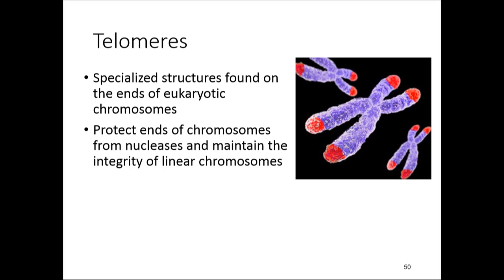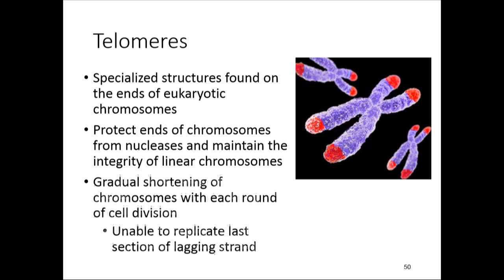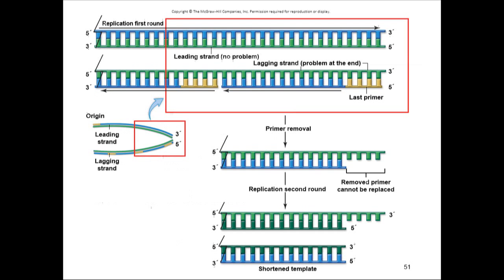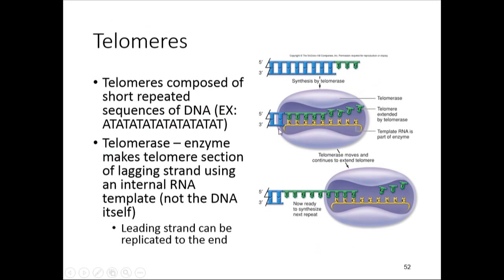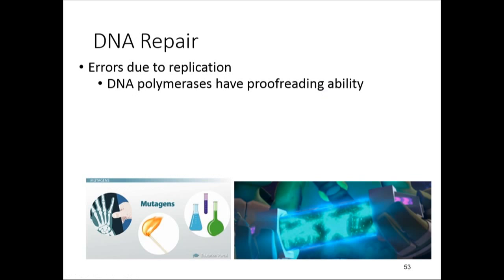Telomeres are the ends of chromosomes, and they maintain the integrity of the linear chromosome against nucleases that would digest them over time. Without telomerase, chromosomes would gradually shorten because the primer can't reach the very end, so that chunk would be cut off. Telomerase adds an RNA primer with repeated sequences — like AAAAAA — and then replaces it with DNA, maintaining the original length.